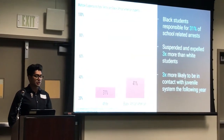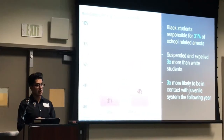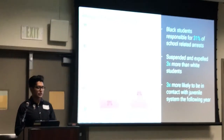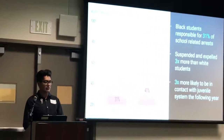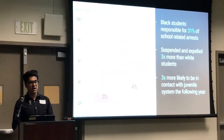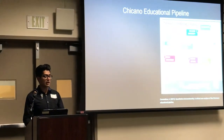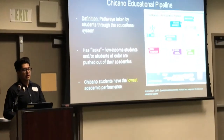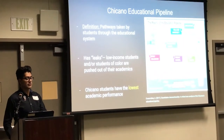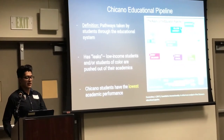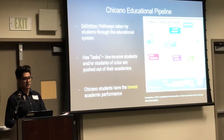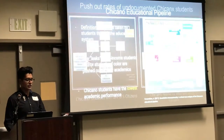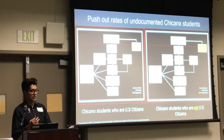Now that I've explored the biases contributing to criminalization for African-American populations, I'll compare how that similar pathway can also affect the Chicanx experience. Could the same factor of bias affect the Chicanx population in terms of academic performance? Just like the school-to-prison pipeline affects African-American students, Chicano students are affected by a pipeline called the Chicano Educational Pipeline — defined as the pathways taken by students through the educational system, which has metaphorical leaks referring to low-income students and students of color pushed out of academics. Chicano students have the lowest academic performances, lowest high school graduation rates, obtain the fewest college degrees, and often show the largest gap in math and sciences.